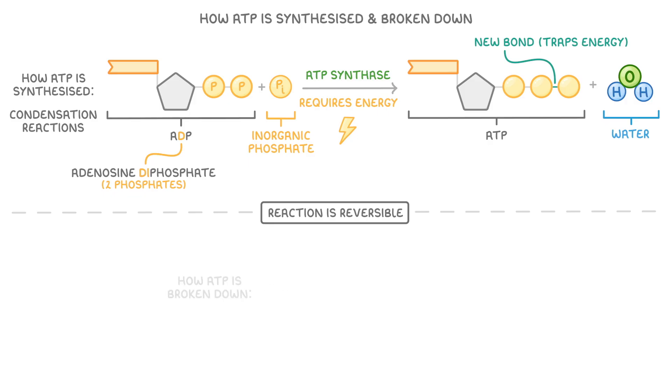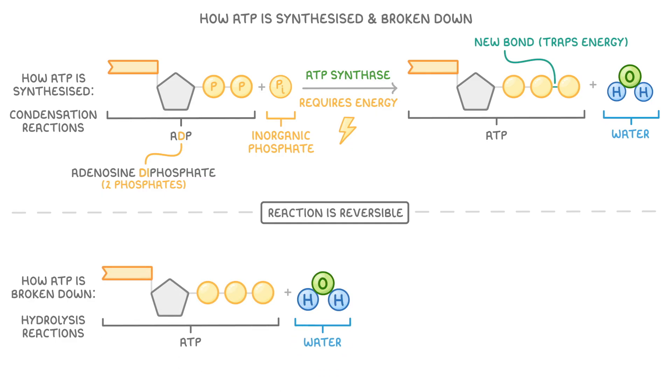So now let's take a look at that reverse reaction, how ATP is broken down, which happens through hydrolysis reactions. In this reaction, we take ATP, and we add a water molecule, in order to break ATP back down into ADP and an inorganic phosphate, and it does this with the help of an enzyme called ATP hydrolase.